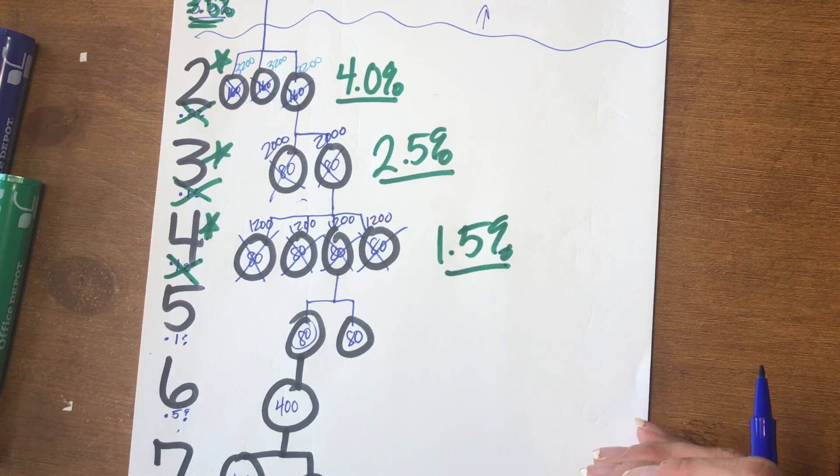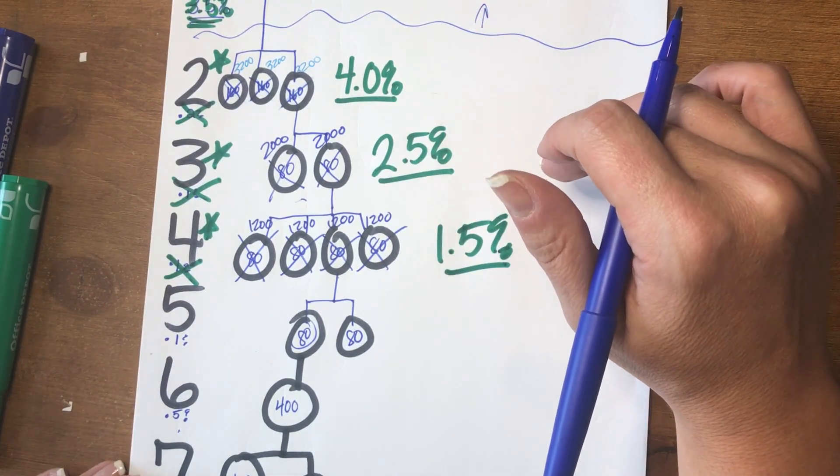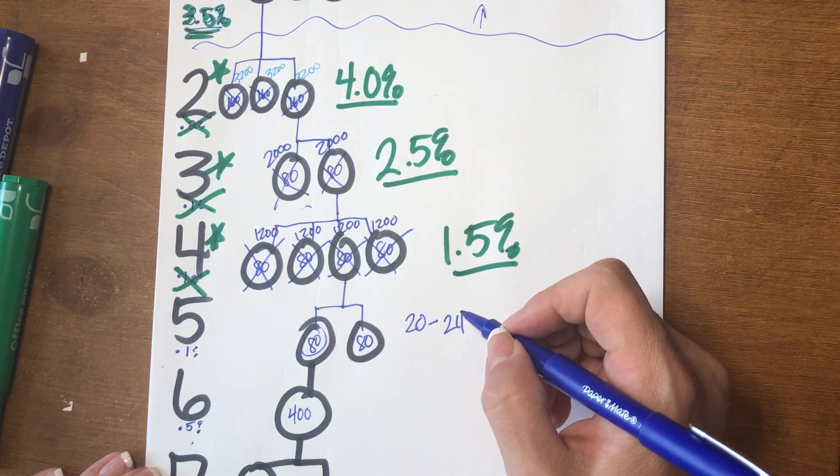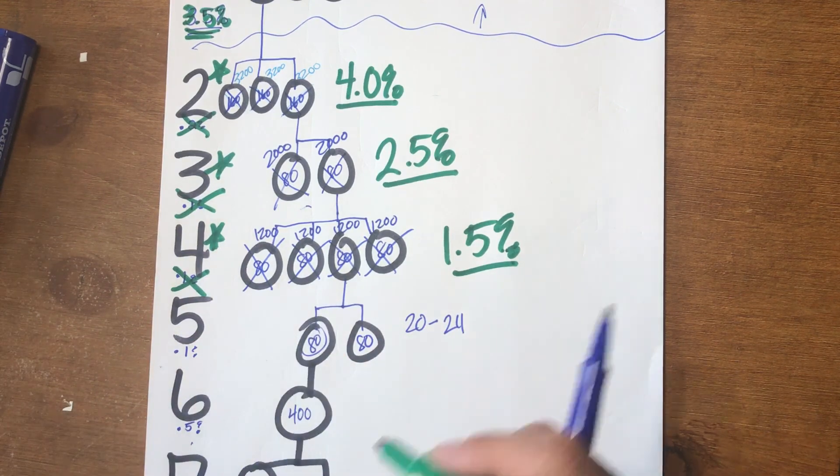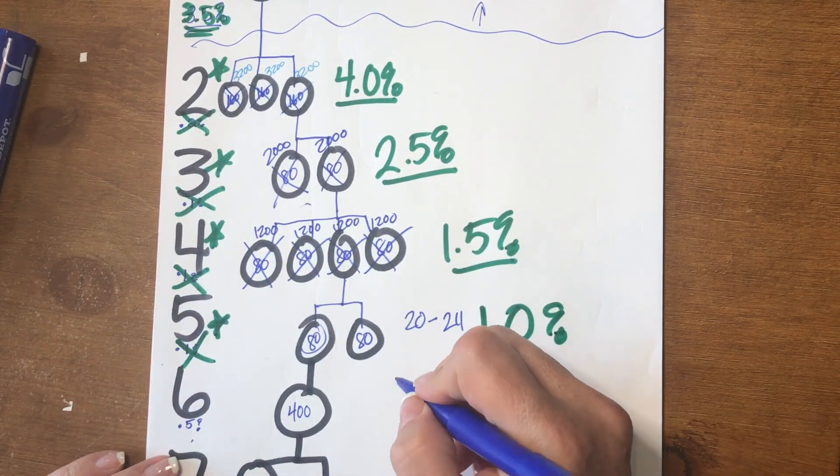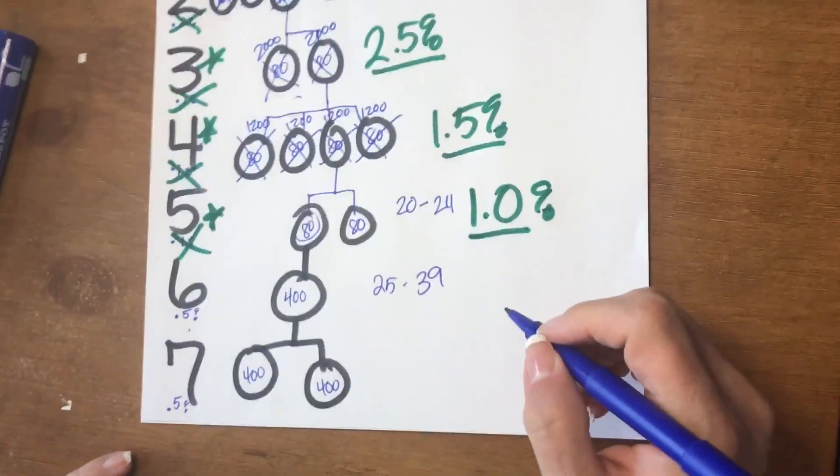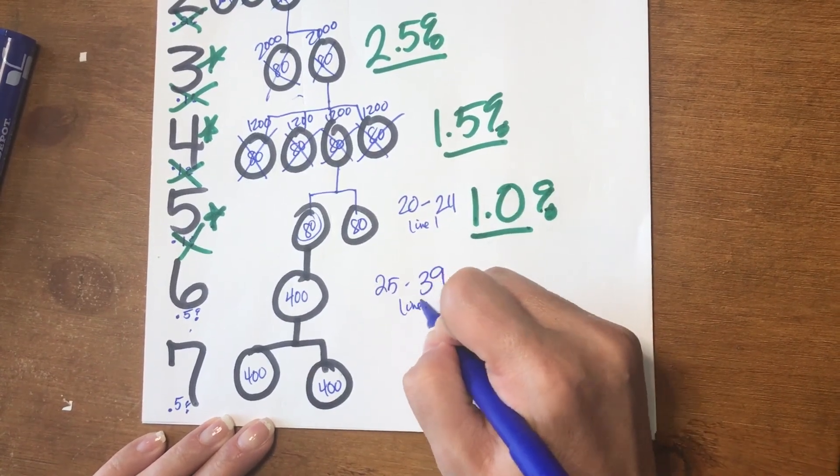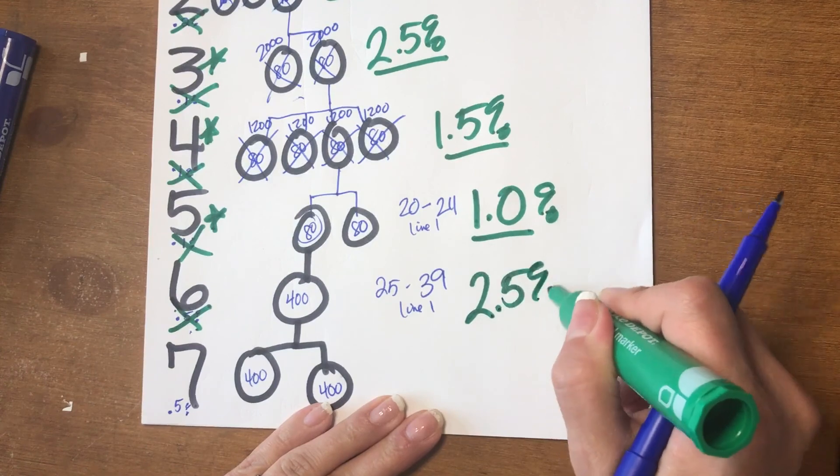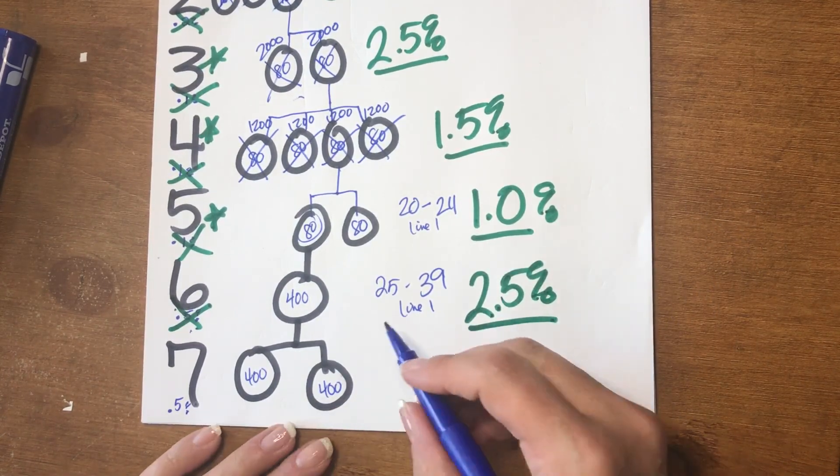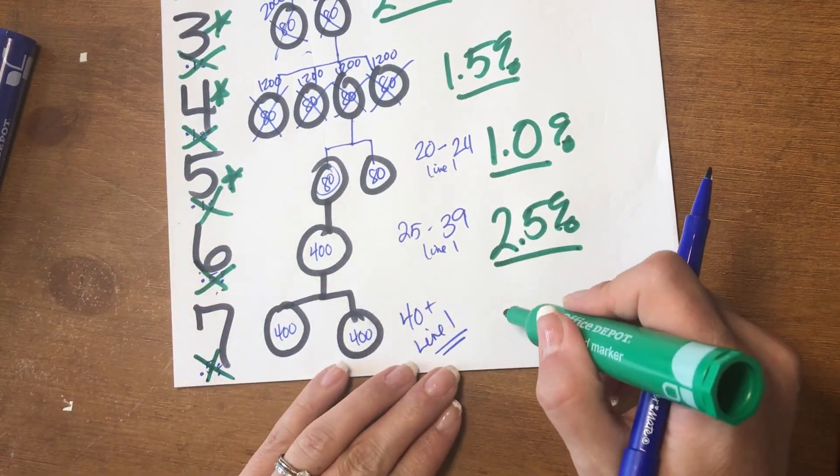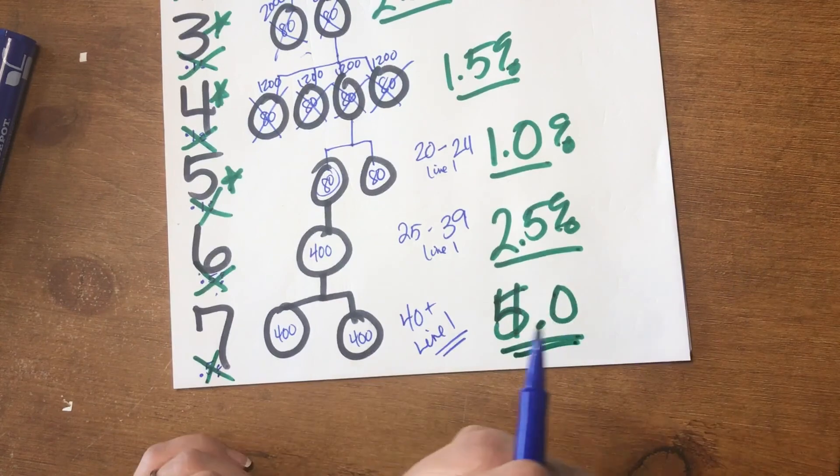This chart will continue to go on as you add agents. In your line five, if you have anywhere from twenty to twenty-four agents in your line one, that will change to 1.0% instead of 0.1%. If you have between twenty-five and thirty-nine in your line one, this will change from 0.5% to 2.5% in your line six. And last but not least, if you have forty plus in your line one qualifying, this 0.5% in line seven will change to 5.0%, which is huge.